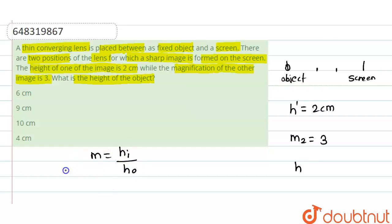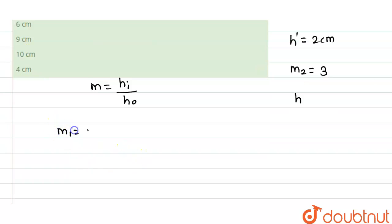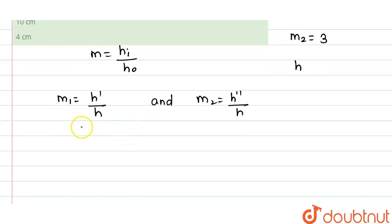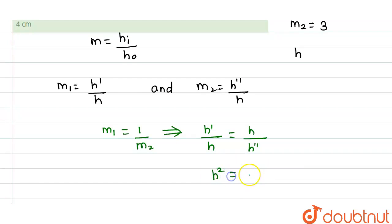m₂ = h'', where h'' is the height of the image for the second sharp image. We know that when using the same lens, the magnifications produced at these two positions are inverse of each other, meaning m₁ = 1/m₂. So we can write h'/h = h/h'', therefore h² = h' × h''.